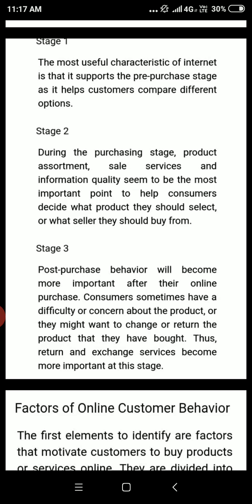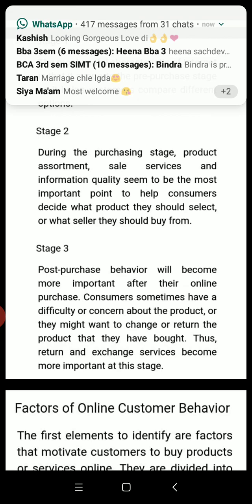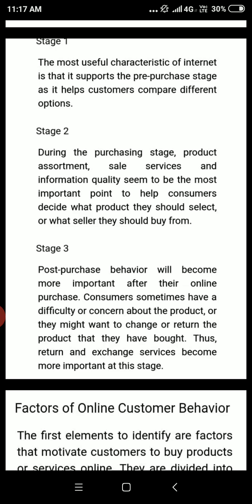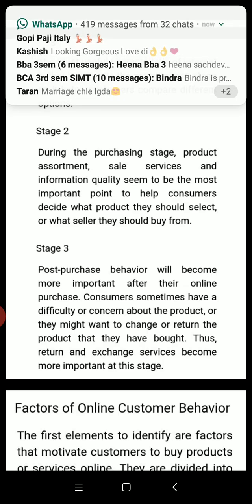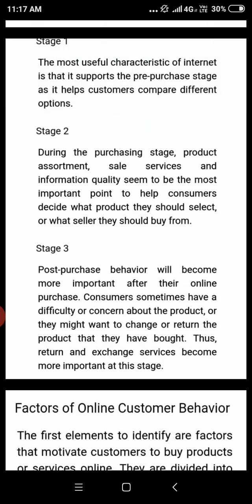Stage one: the most useful characteristic of the internet is that it supports the pre-purchase stage, as it helps customers compare different options. For example, when we want to buy a mobile online, we Google it, compare two or three mobiles, and then purchase from Amazon.